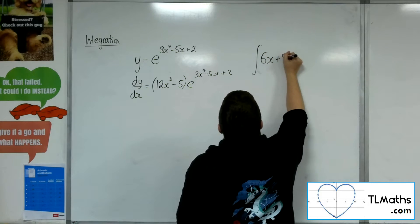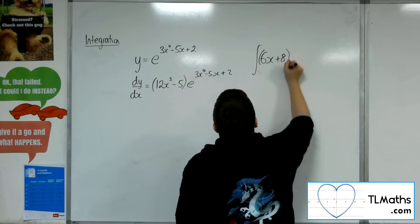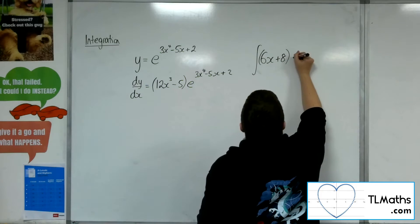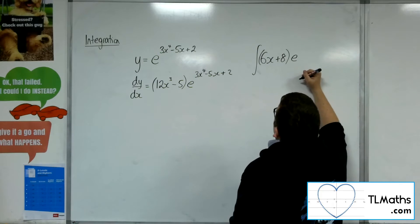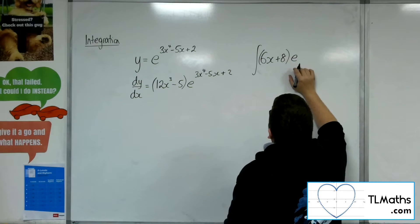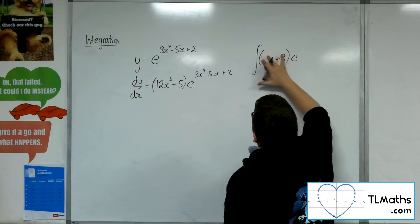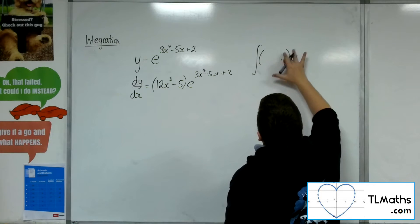6x plus 8 times e to the, let's say, what could we have? Let's work it backwards instead, right?